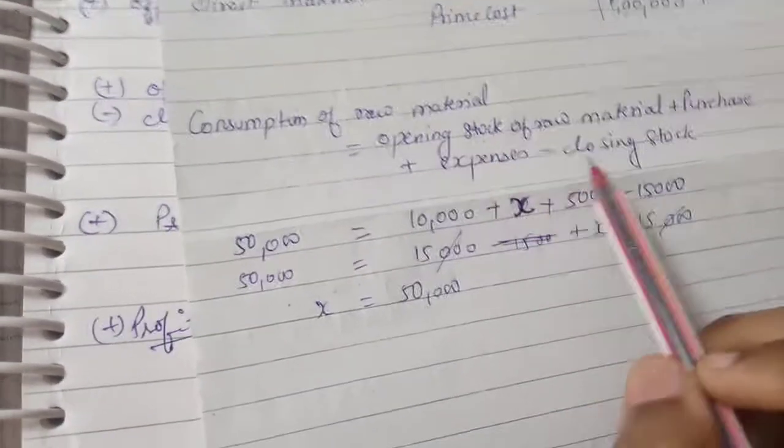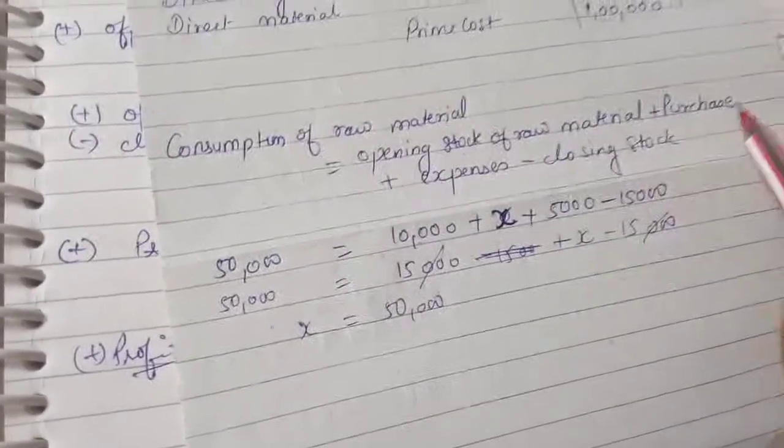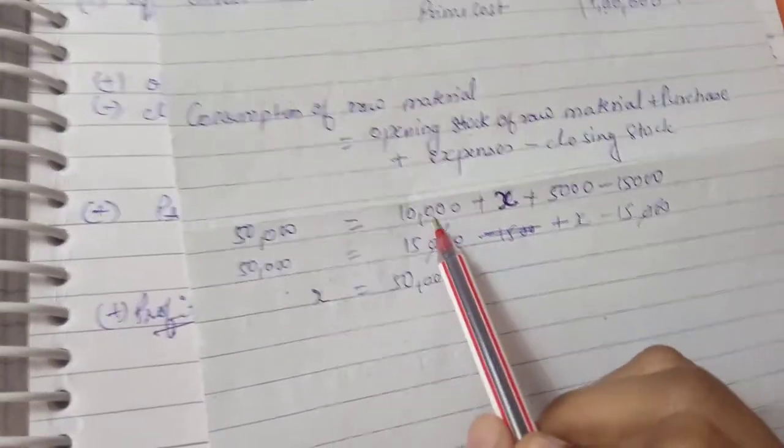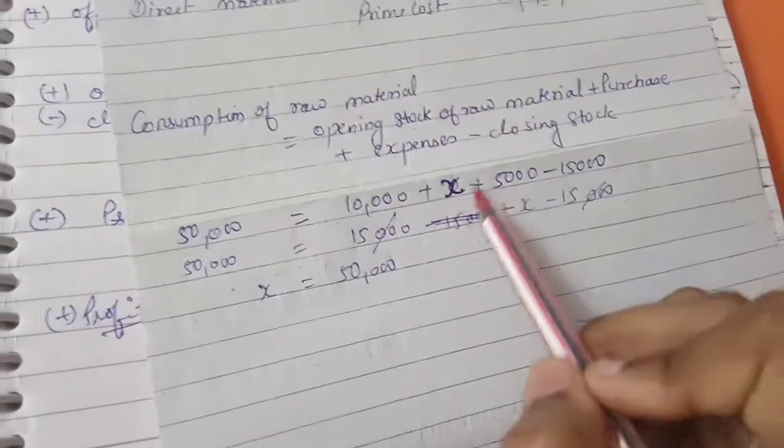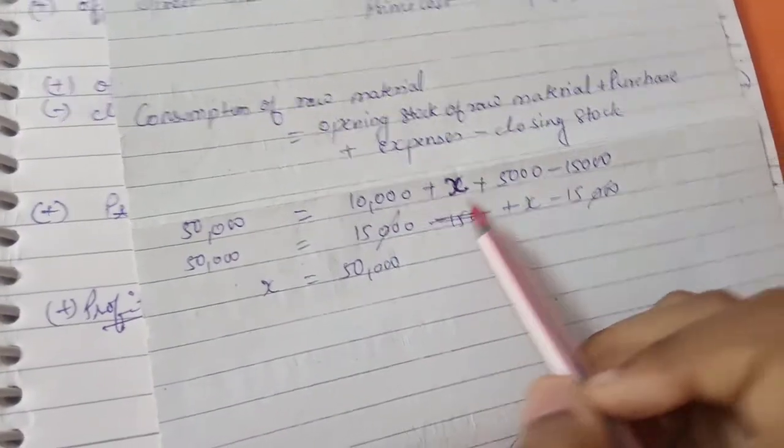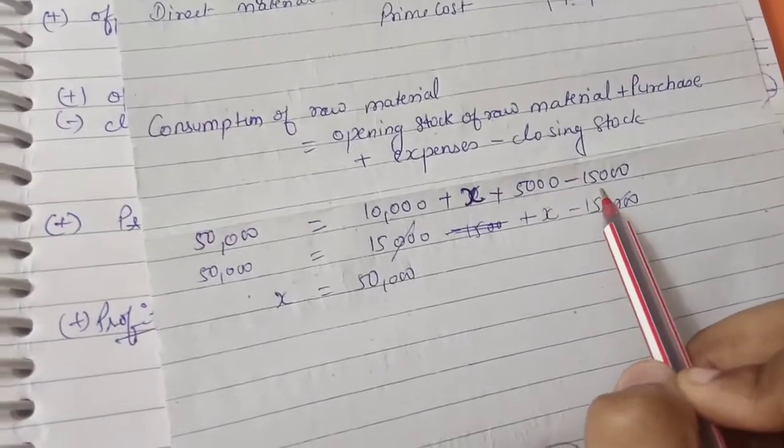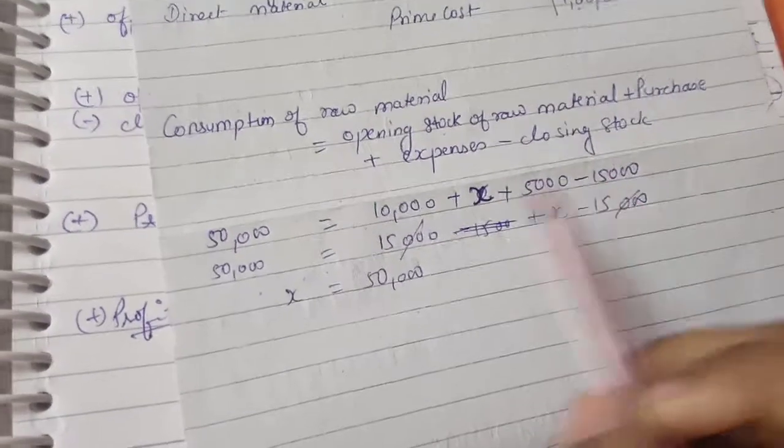To find the purchase, I have consumption given, opening stock given, for purchase let me take X, expenses given is 5,000, and closing stock 15,000. So 10,000 plus X plus 5,000 minus 15,000